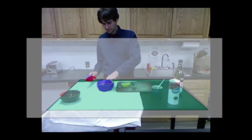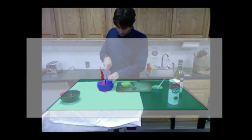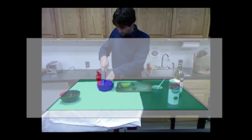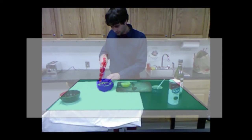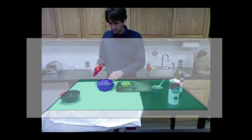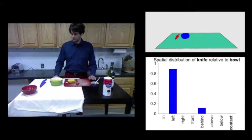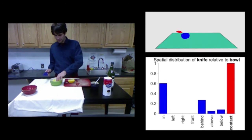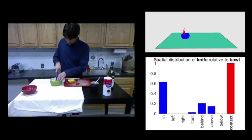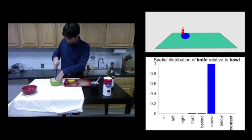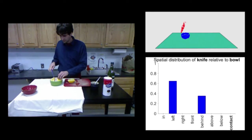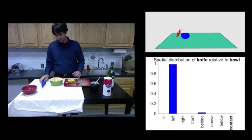Object, tool, and action — i.e., hand grasp hypotheses — are given to the symbolic system, which initiates a spatial reasoning. The process checks the spatial relations between different objects and tools. Here, first the knife is found left of the bowl. Then, as the person starts cutting, the knife is above the bowl, and also inside the bowl. When the person finishes, he puts the knife back to the left of the bowl.